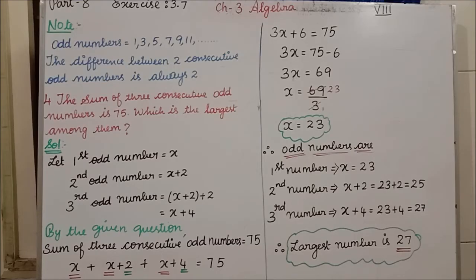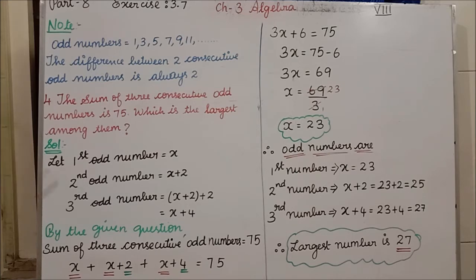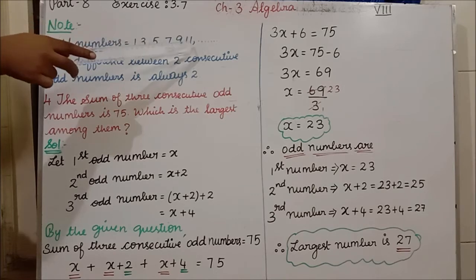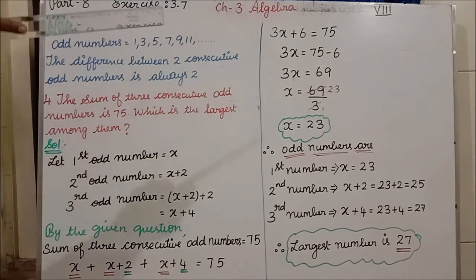Next we will see the 4th question. Before going to it, let us review a note about odd numbers. Odd numbers start from 1 and go to infinity: 1, 3, 5, 7, 9, 11, 13, 15, 17, and so on.